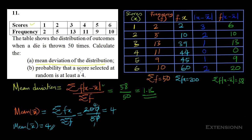The second question asks for the probability that a score selected at random is at least 4. In probability, 'at least' means that number or more, while 'at most' means that number or less. So 'at least 4' means 4 or more than 4.